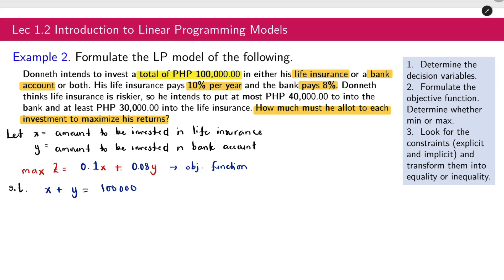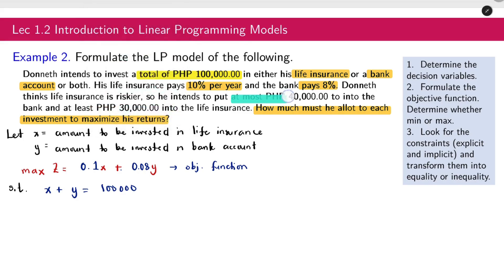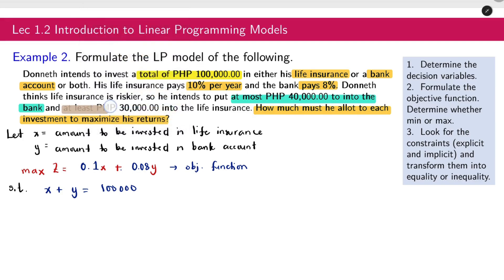Donet thinks life insurance is riskier, so he intends to put at most 40,000 into the bank. Let's highlight. Into the bank, and then the other one.